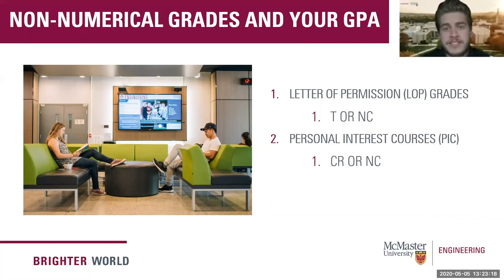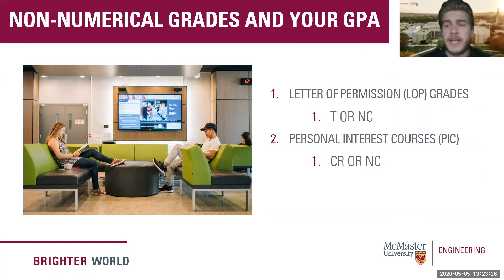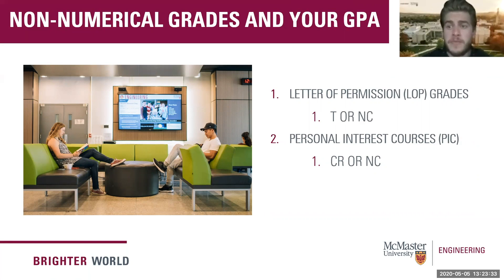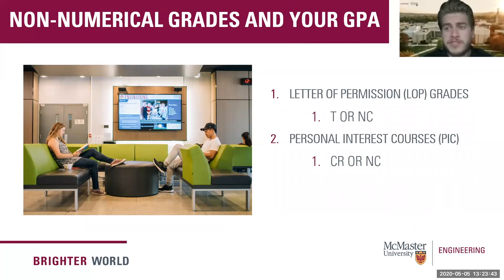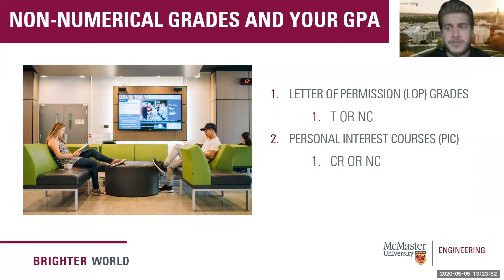Next: non-numerical grades. When calculating your GPA, if you have a non-numerical grade, we remove that course from the calculation. Common examples for undergraduate students include courses taken on a letter of permission (LOP), where you'd receive a T for transfer or NC for no credit. Similarly, a personal interest course (PIC) at McMaster would yield a CR for credit or NC for no credit. These courses are not used in the GPA calculation.